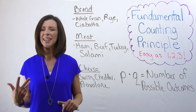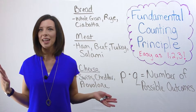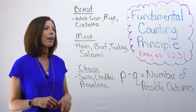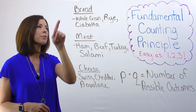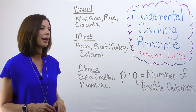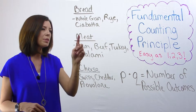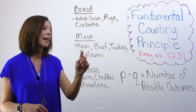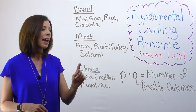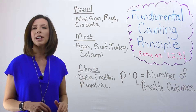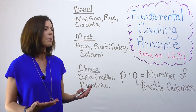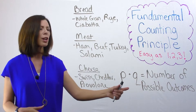Let's take an example — something I love: sandwiches. Let's say we have some different types of bread: whole grain, rye, and ciabatta. We have some different kinds of meat: ham, beef, turkey, and salami. And we have some different kinds of cheese: swiss, cheddar, and provolone.